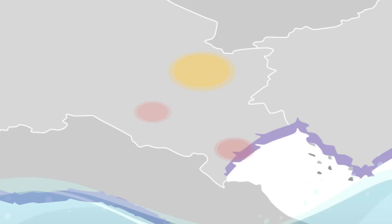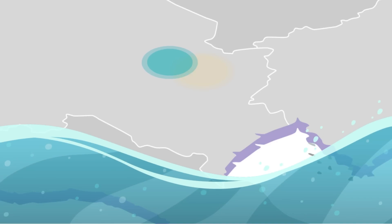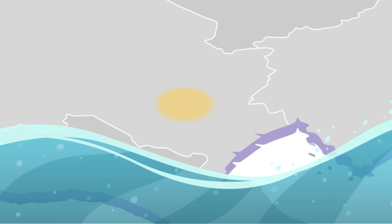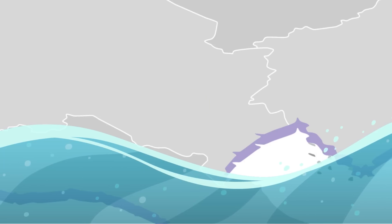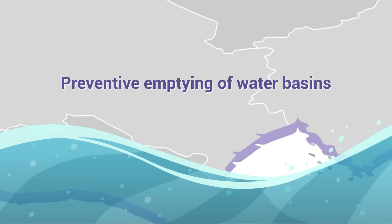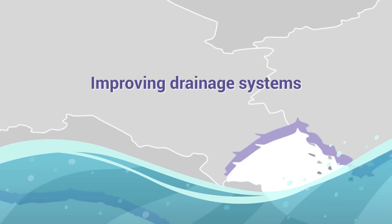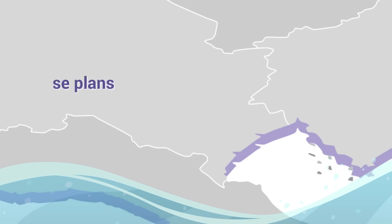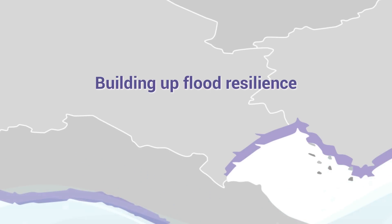It can be useful in preventing flooding by providing the authorities with a visual representation of areas that are at high risk of flooding. The authorities can then identify and prioritize areas for flood prevention measures such as preventive emptying of water basins, improving drainage systems, implementing flood barriers, developing emergency response plans, and building up flood resilience.